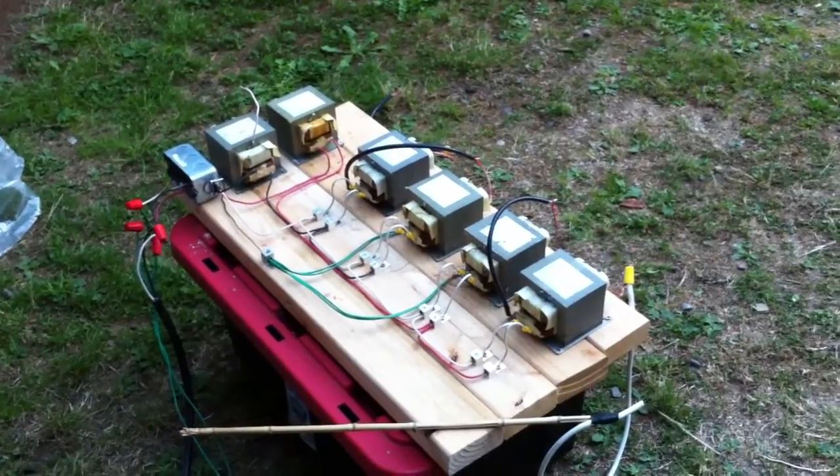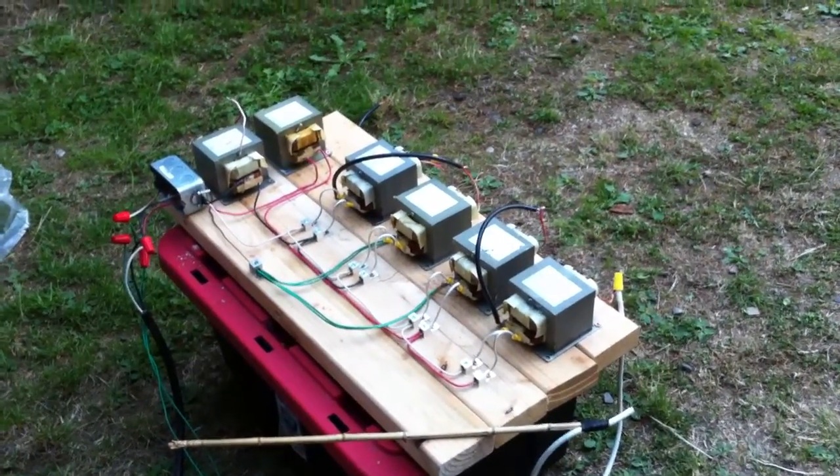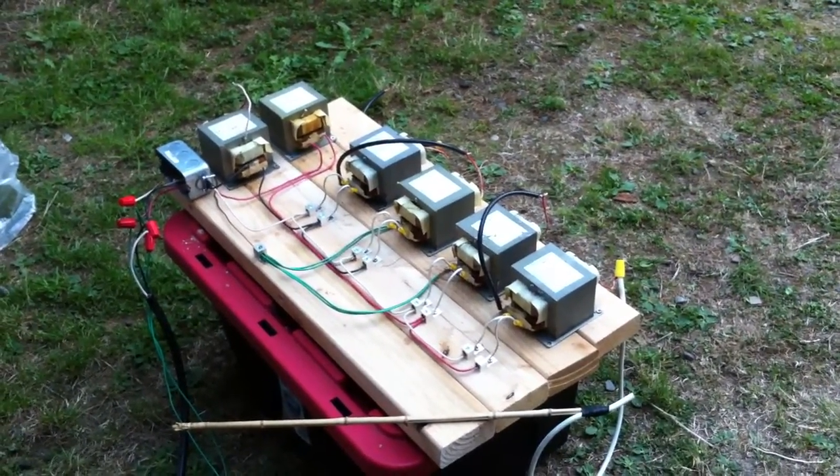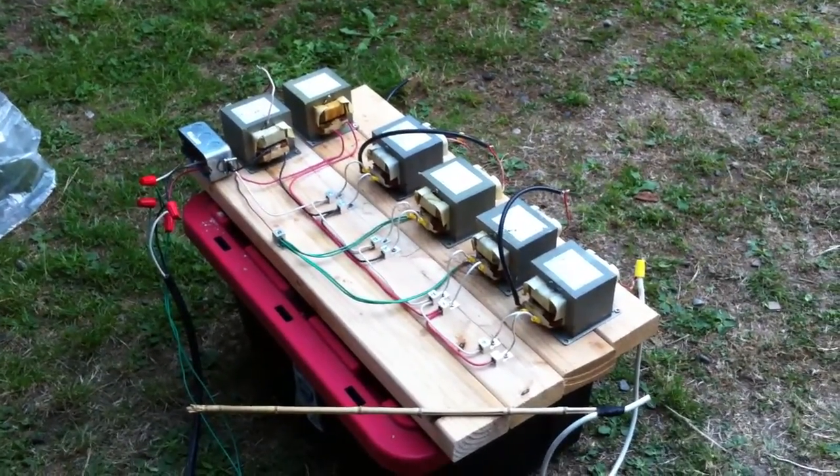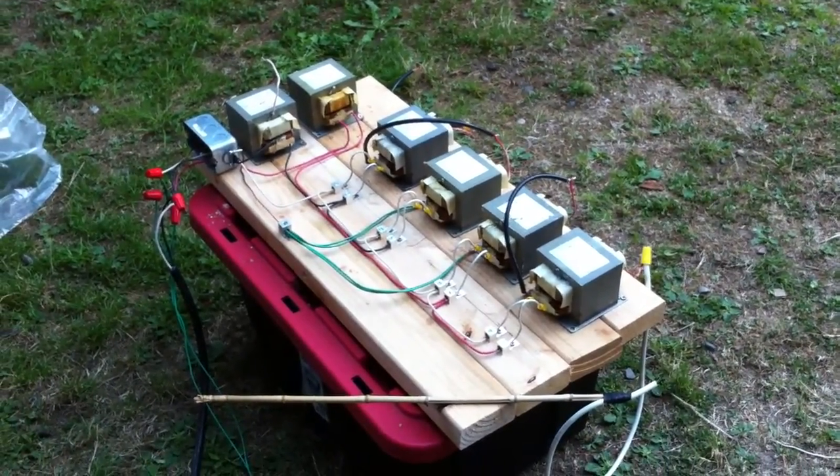What you see there, the 4 MOTs in a row are the ones that are creating the voltage. The 2 MOTs that are next to the electrical box, up there on the top left, those are both being used as ballast.